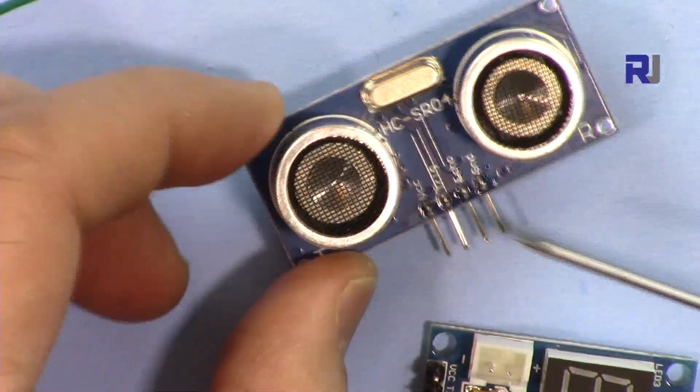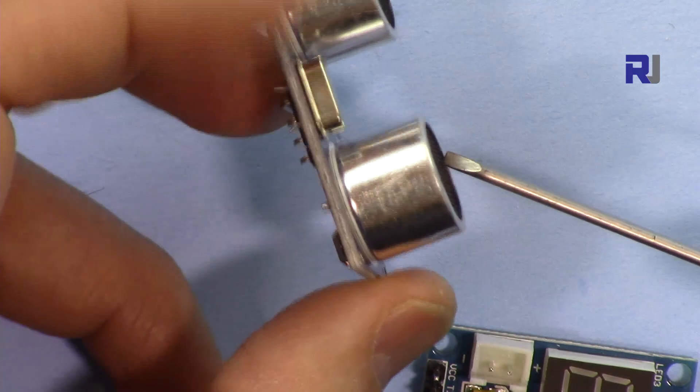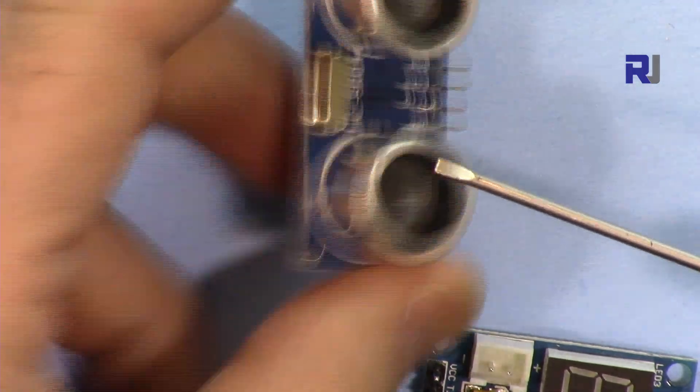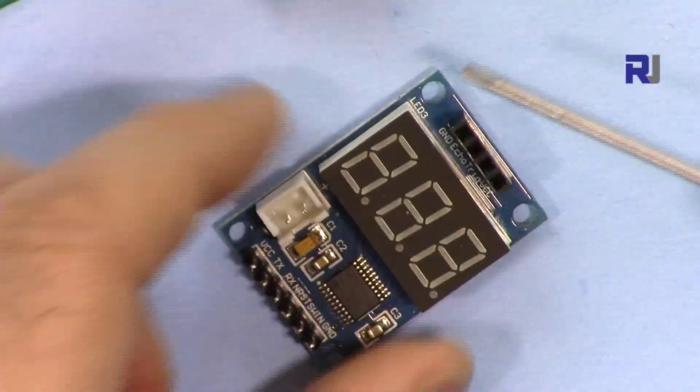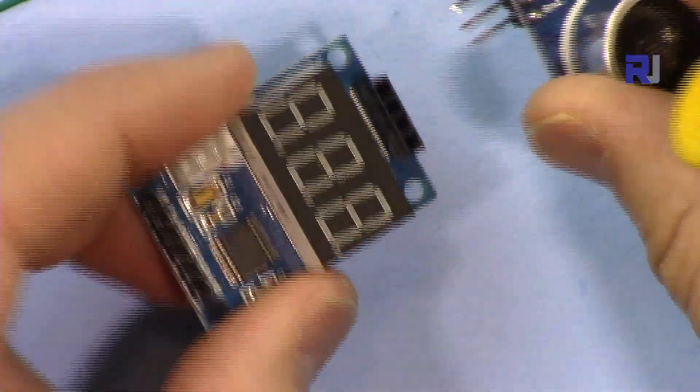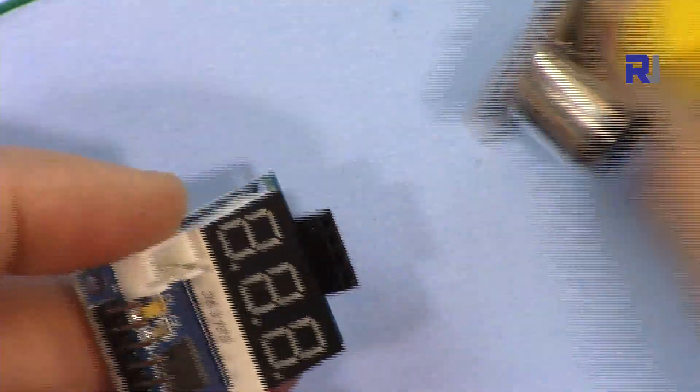need to use this ultrasonic distance meter and you just want to know the value. So without any computer or anything, just supply 5 volts and this will work. All the pins are aligned, so you don't have to do anything—just insert it.